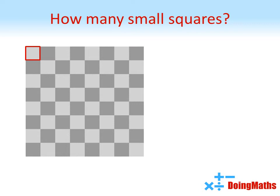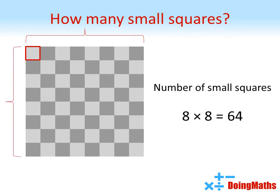Let's start by counting the small squares. There are 8 small squares in a row and 8 rows. Therefore we have 8 times 8 equals 64 small squares.